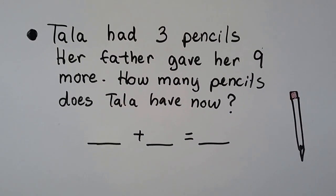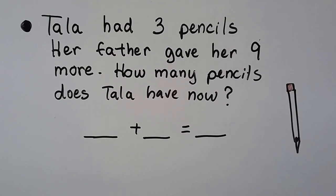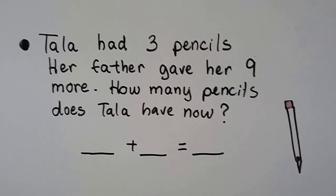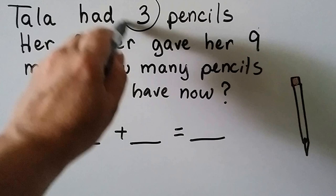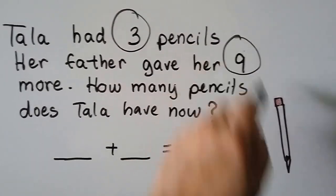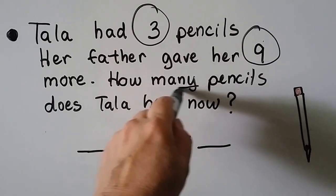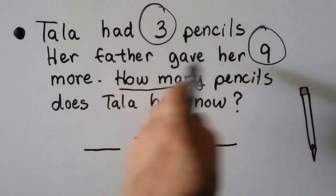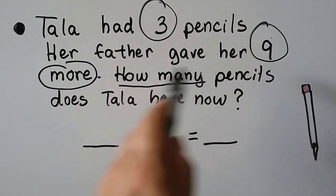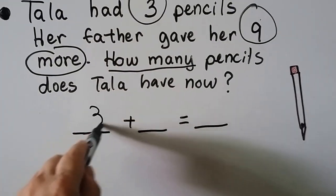Tala had three pencils. Her father gave her nine more. How many pencils does Tala have now? Let's circle our important information: she had three, her father gave her nine more. Her father gave her nine more means we have nine more than three — we have three plus nine.